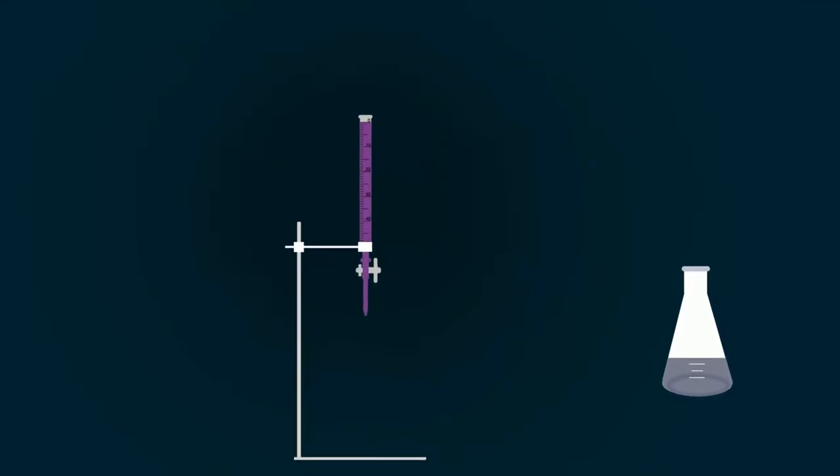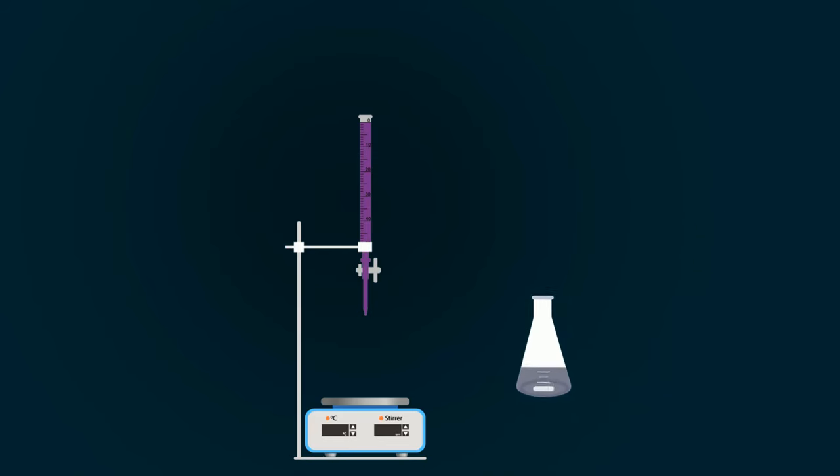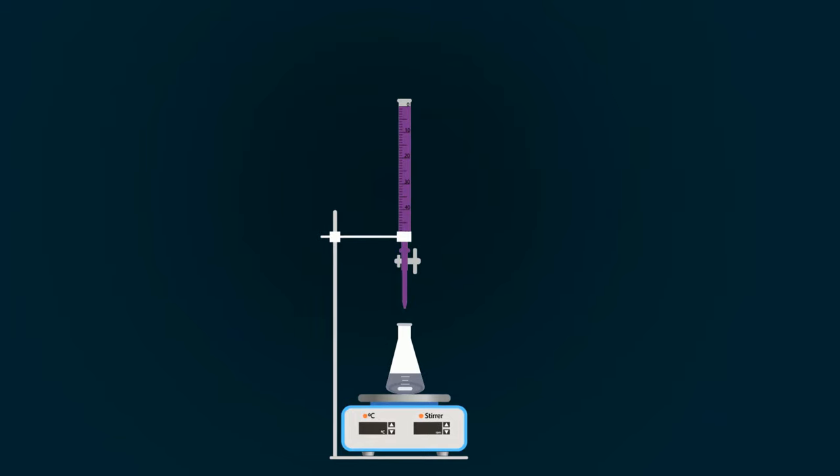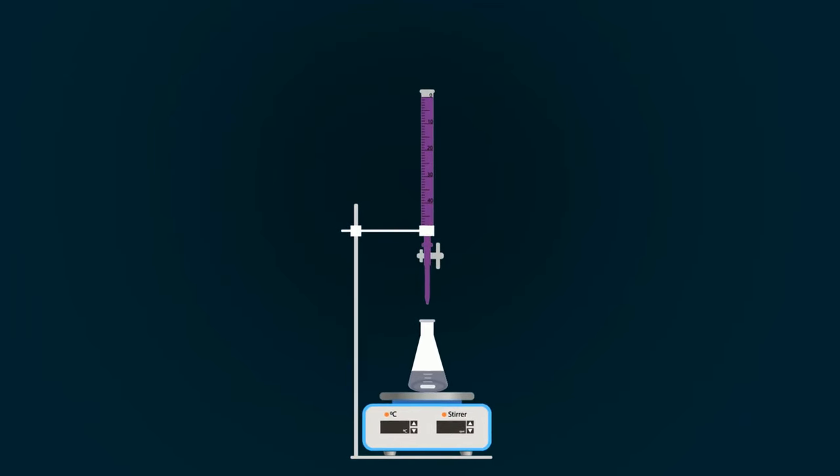Put the magnetic stirrer onto the burette and put the magnetic bar into the conical flask. Place the conical flask on the magnetic stirrer. You can adjust the speed of the magnetic stirrer. In this experiment, we take 150 RPM.